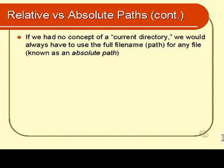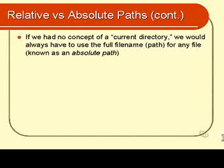An absolute path is absolute because it doesn't matter where you are at the time. If you type in that whole thing, including the forward slash at the beginning, then you will always be able to access the file. The advantage of an absolute path is that it never changes depending on where you are — you can be anywhere and it's always the same. But the disadvantage is that it can be very, very lengthy to type — in other words, inconvenient.